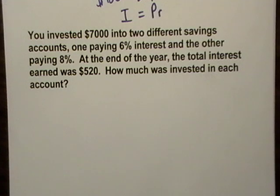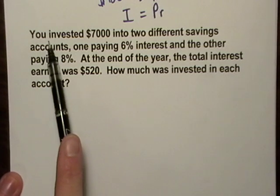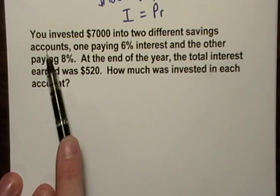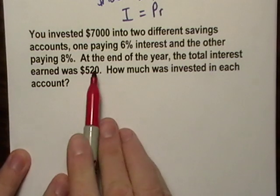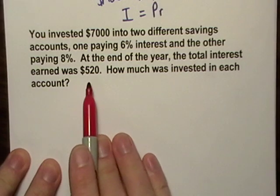Let's read the problem. It says you have invested $7,000 into two different savings accounts. One pays 6% interest and the other one pays 8% interest. At the end of the year, the total interest earned was $520.